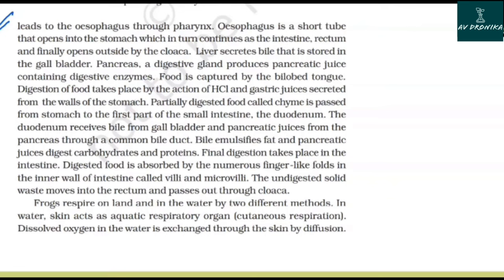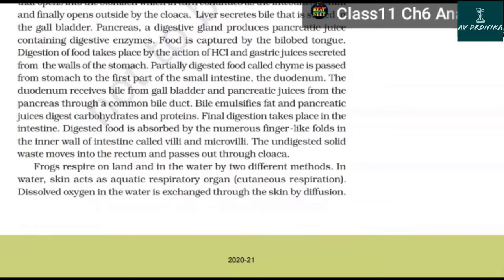The liver secretes bile that is stored in the gallbladder. The pancreas, a digestive gland, produces pancreatic juice containing digestive enzymes. Food is captured by the bilobed tongue. Digestion takes place by the action of HCl and gastric juices secreted from the walls of the stomach. Partially digested food called chyme is passed from the stomach to the duodenum, which receives bile from the gallbladder and pancreatic juices through a common bile duct. Bile emulsifies fat and pancreatic juices digest carbohydrates and proteins. Final digestion takes place in the intestine. Digested food is absorbed by finger-like folds called villi and microvilli in the inner wall of the intestine. Undigested solid waste moves into the rectum and passes out through the cloaca.